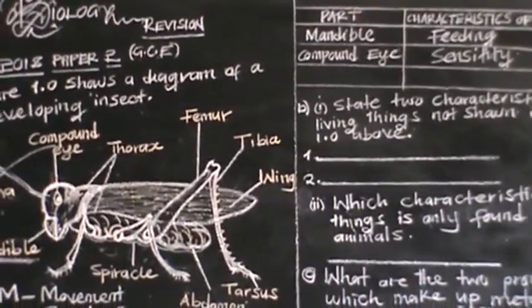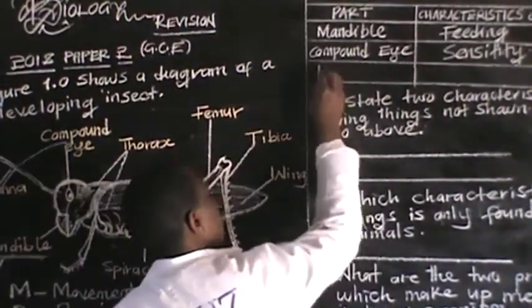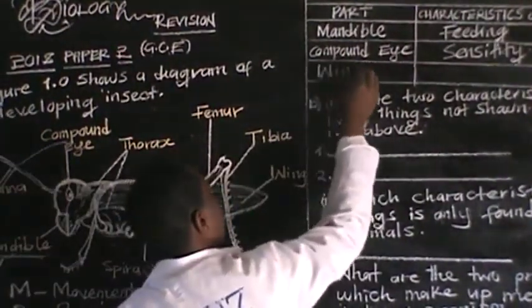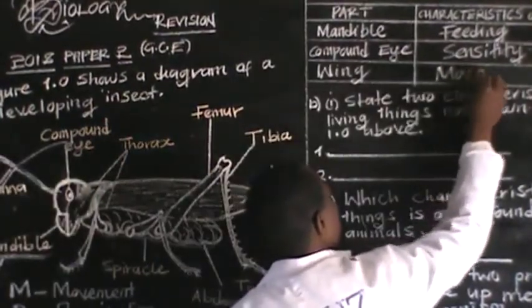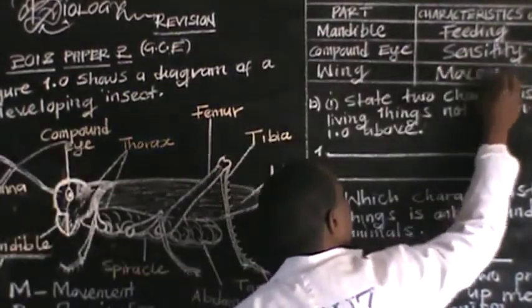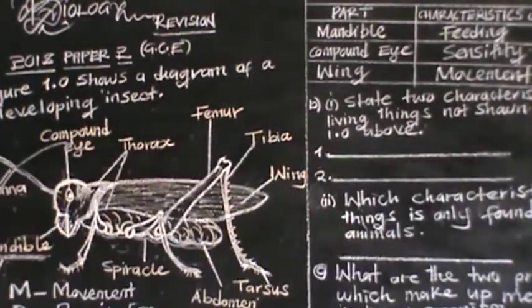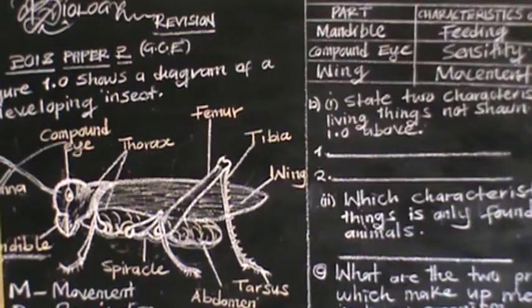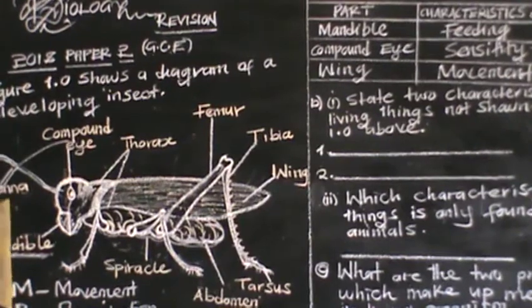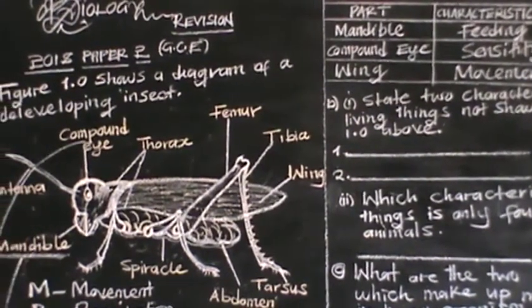Can we pick the wing? The wing is for movement — yes. The wing is associated with movement. Then let us also pick the antenna — the antenna is associated with sensitivity.